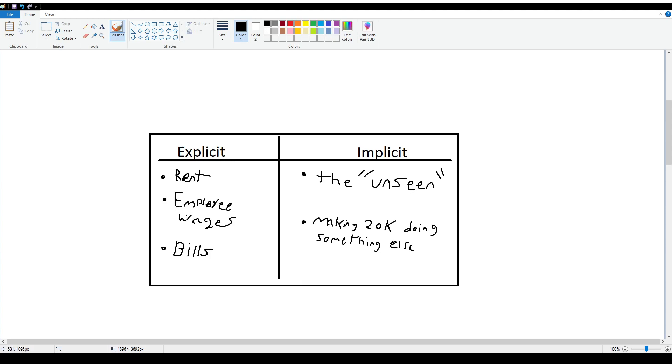While implicit is more of the unseen. For example, if you make money doing something else that you won't be able to make doing what you want to do, it'll be more clear with the example.